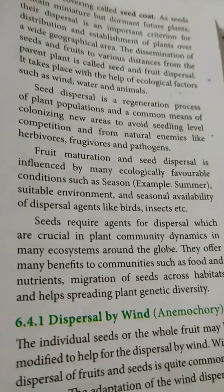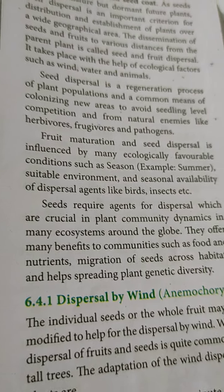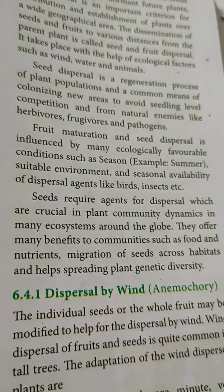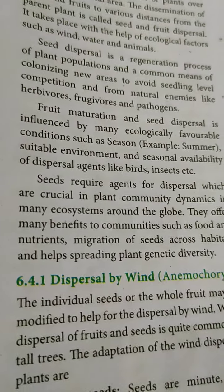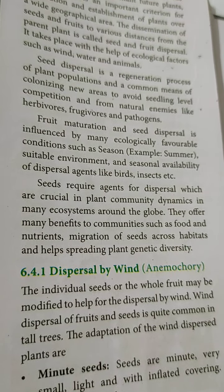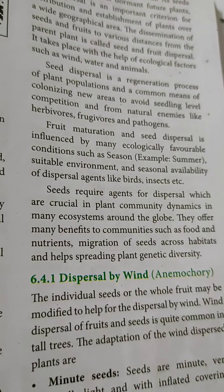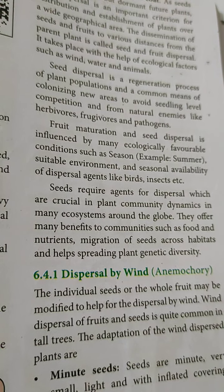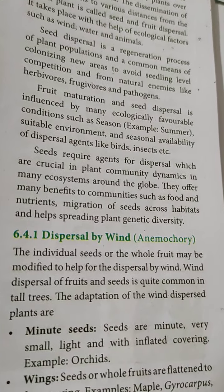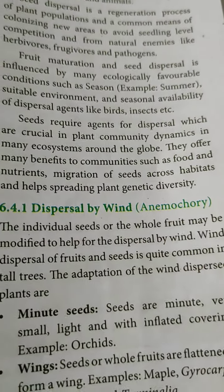Fruit maturation and dispersal are influenced by many ecologically favorable conditions such as season, suitable environment, and seasonal availability of dispersal agents like birds and insects. Seeds require agents for dispersal, which are crucial in plant community dynamics. They offer many benefits such as food and nutrients, migration of seeds across habitats, and helping spread plant genetic diversity.